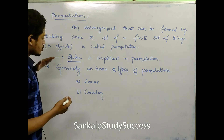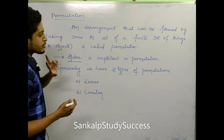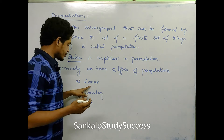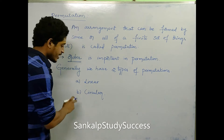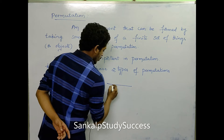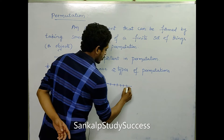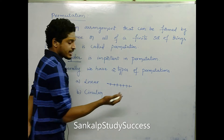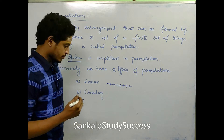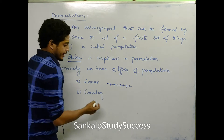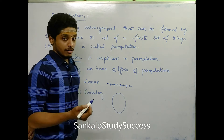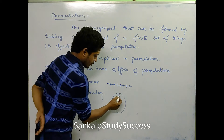In general, there are two types of permutations: linear permutation and circular permutation. Linear permutation means we arrange members in a row, like arranging books in a row. Circular arrangement involves a circle, like a round table conference.